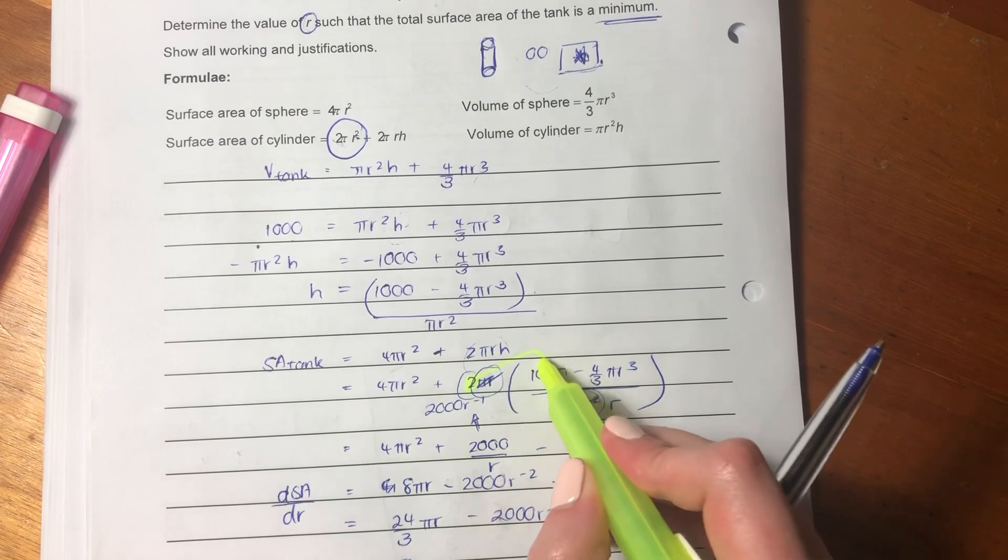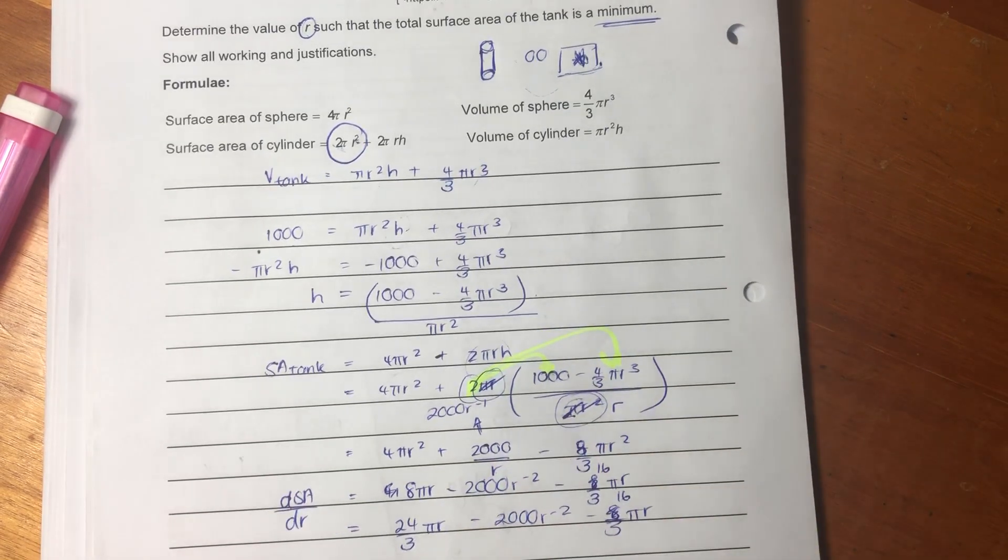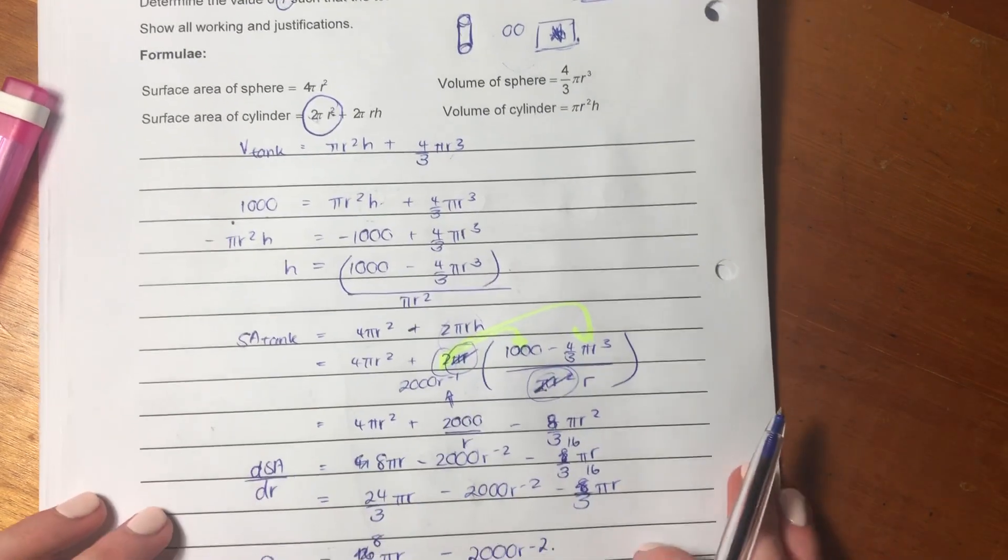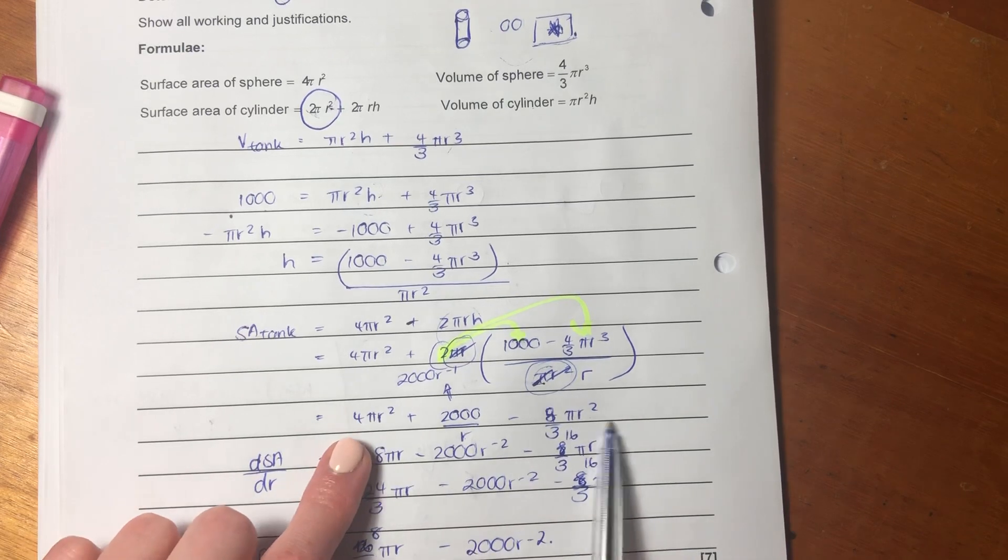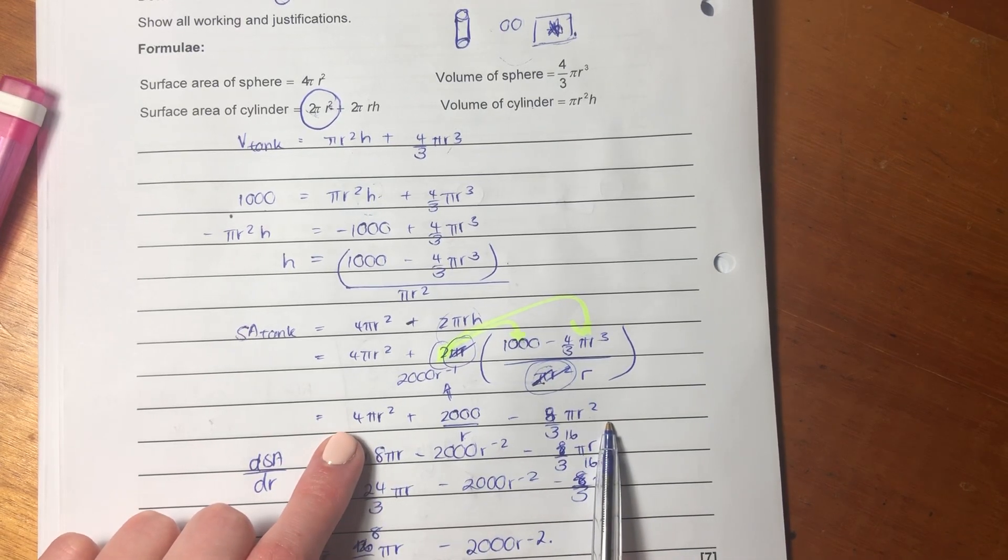Then I've basically said, okay, I've got to this point here. Now, I want to find out what that radius must be to make that total surface area a minimum.